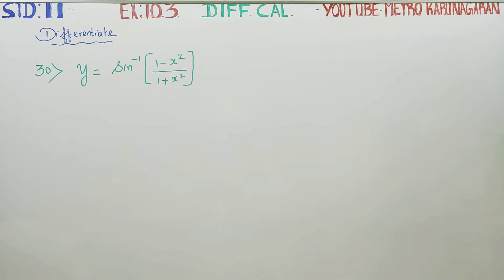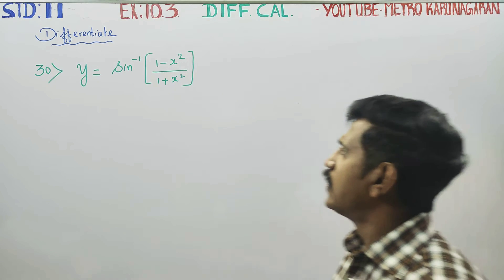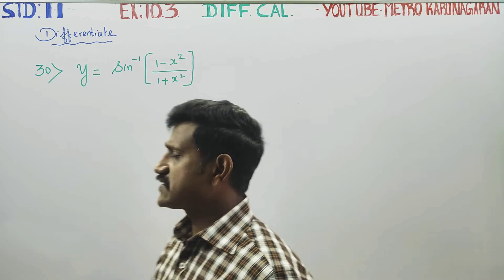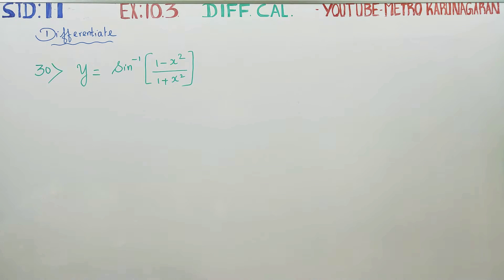Dear Learn Standard students, in exercise number 10.3, sum number 30, differentiate y is equal to sin inverse of (1 minus x square) by (1 plus x square).